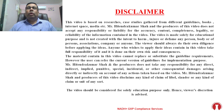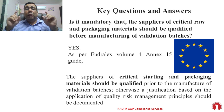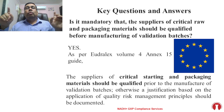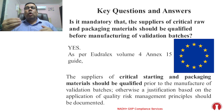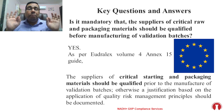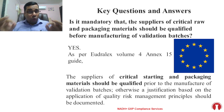Let us discuss the first question: is it mandatory that the suppliers of critical raw materials and packaging materials should be qualified before manufacturing of validation batches? The answer is yes, very clearly yes. As per EU GMP Volume 4 Annex 15, the suppliers of critical starting and packaging materials should be qualified prior to the manufacture of validation batches. Otherwise, a justification based on application of quality risk management principles should be documented.